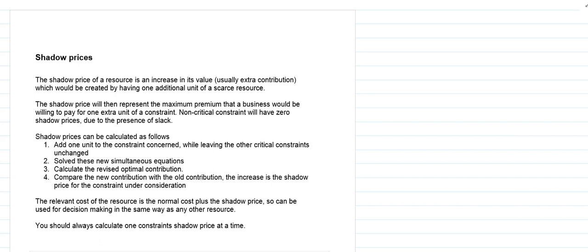The shadow price is the increase in contribution created by the availability of an extra unit of a scarce resource given its original costs. Therefore, a business will be prepared to pay the original cost for one unit plus the shadow price to bring the total cost of one additional resource.